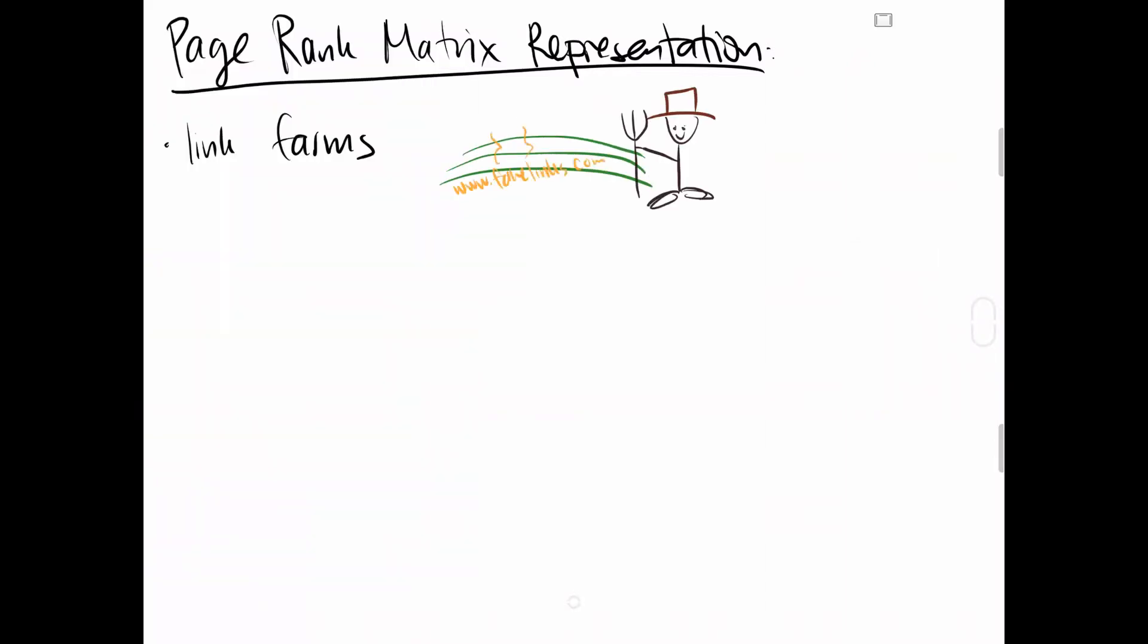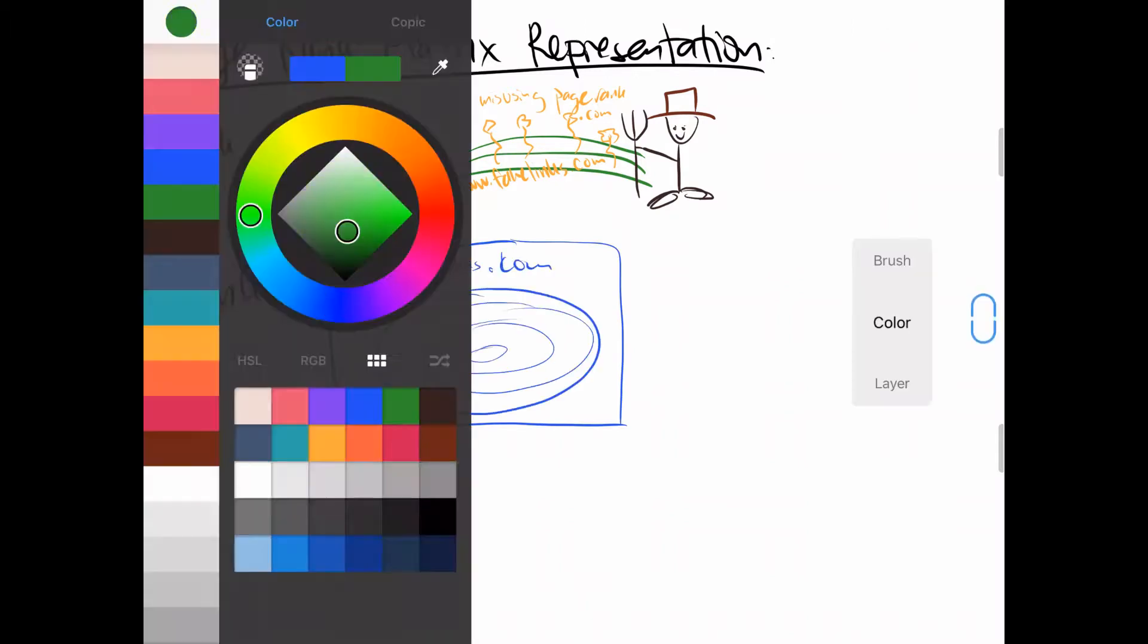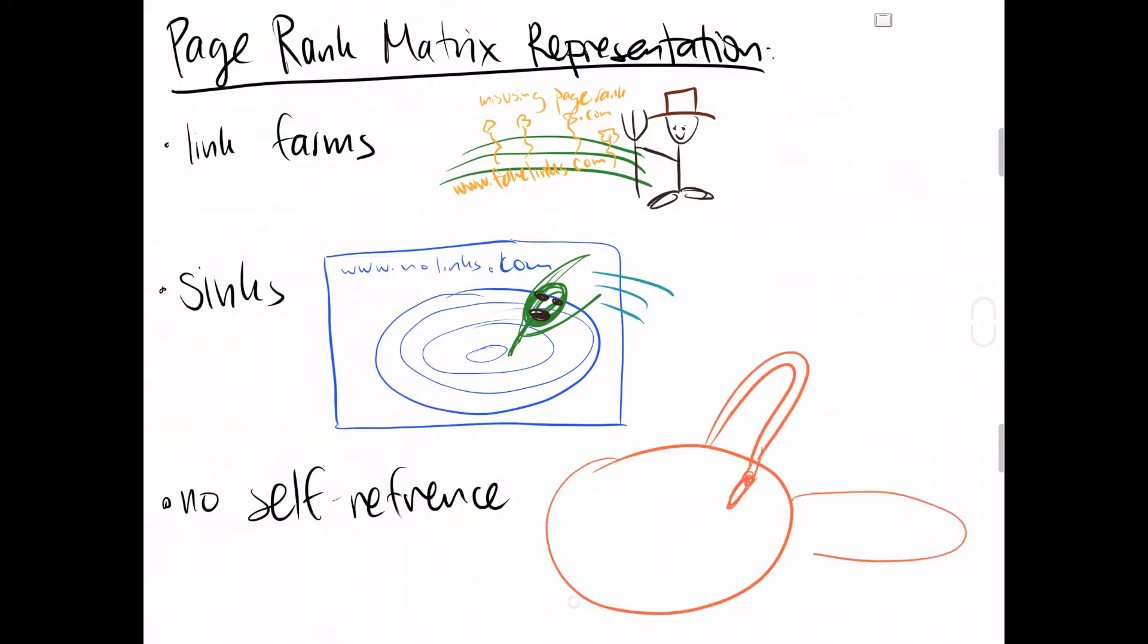In order for the PageRank matrix to represent the entire World Wide Web, Larry Page and Sergey Brin wanted a way to account for the interconnectedness of each website. Additionally, they wanted to remove useless websites and links in the representation. They wanted to remove link farms and sinks. Link farms are websites that have multiple links in order to raise its PageRank, and sinks are websites that don't have any outlinks, so once you click on them you can't escape the page.